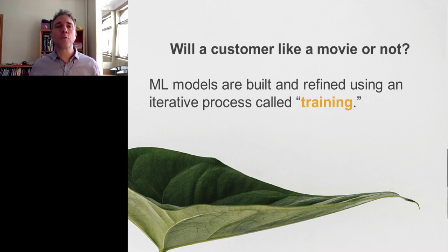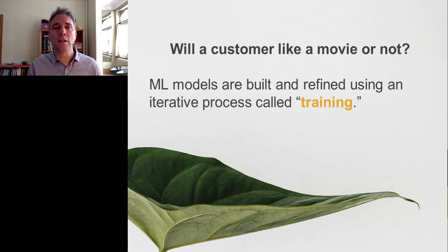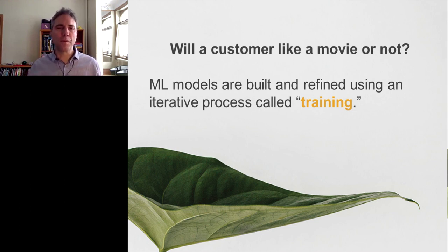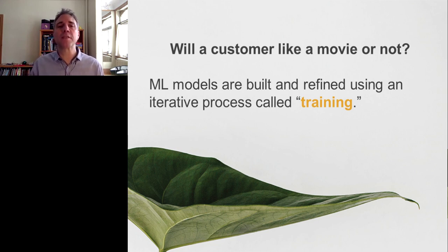In order to give you some intuition about the process of building those models, I'd like to use a simple, typical example of a video streaming service that wants to make good movie recommendations to its customers. They want to build a model that's capable of answering the question: will this particular customer like this movie or not? The streaming company will show that machine data in order to create that question-answering machine and refine it over time using this iterative process we call training.